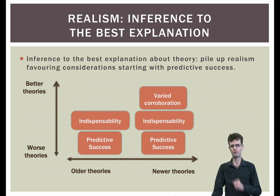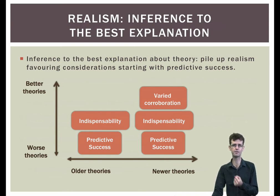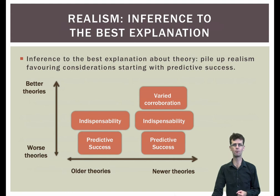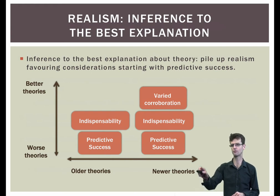The best explanation for one to three is that the existence claims of our current theories are correct, or at least close to being correct. This is an inference to the best explanation to the correctness of the existence claims of our current theories. We can chart improvements in theories by showing how newer ones have more of these features. However, this inductive argument still owes much to intuitive appeal and it faces some immediate challenges from instrumentalism.